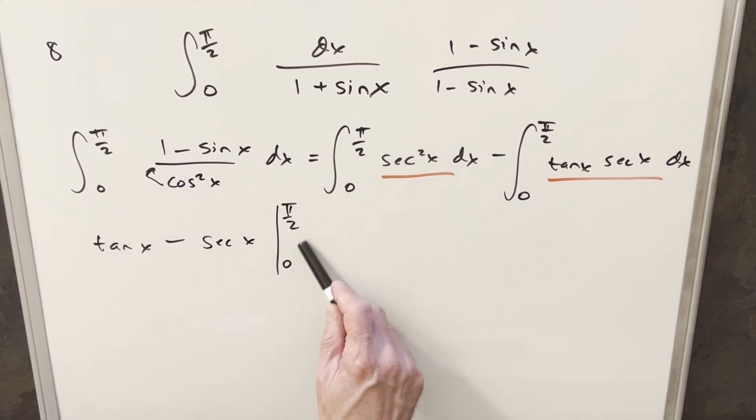And now at this point, this is where we get into some trouble evaluating these bounds. First of all, at pi over 2, well, when we evaluate this we'll evaluate it as a limit, but tan at pi over 2 is going to infinity.